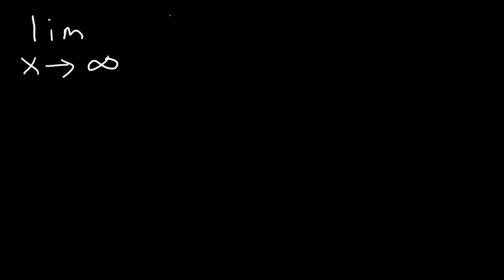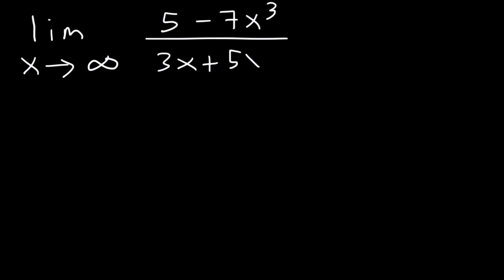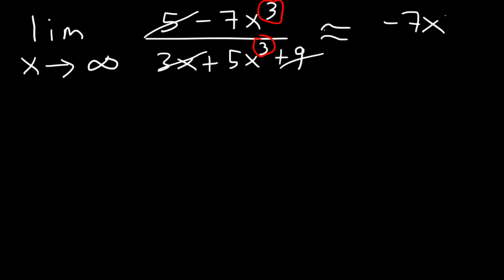What is the limit as x approaches infinity of 5 minus 7x cubed divided by 3x plus 5x cubed plus 9? Notice that the degree of the numerator is 3 and the degree of the denominator is 3. As x becomes large, 5 is insignificant to 7x cubed, and 3x and 9 are insignificant to 5x cubed. So this is approximately equal to negative 7x cubed divided by 5x cubed, which gives negative 7 over 5.